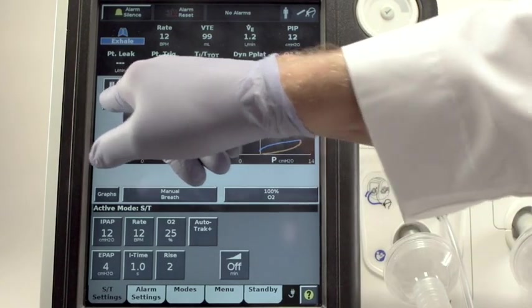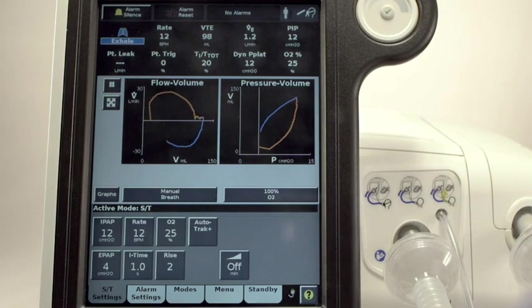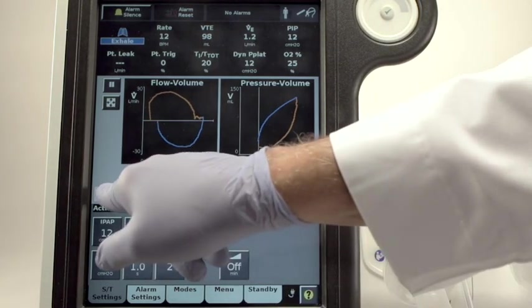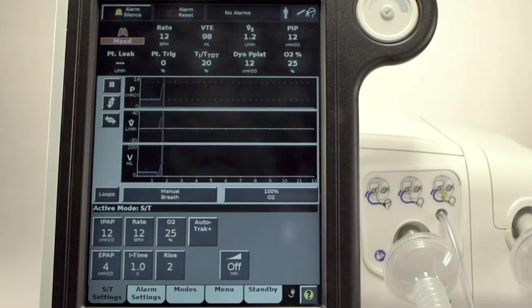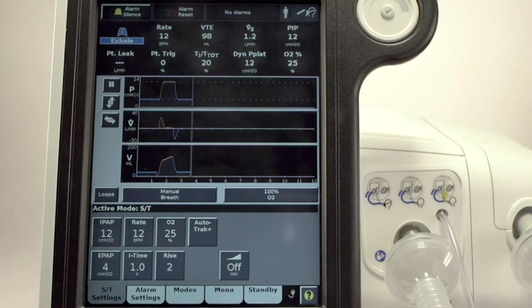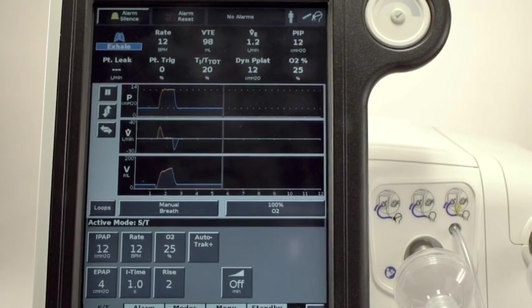You can toggle back and forth between waveforms and loops by simply touching the selection button on the lower left area of this screen. You can also pause, resume, and auto-scale the display at the touch of a button.